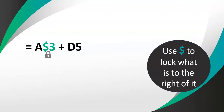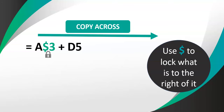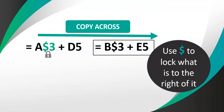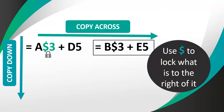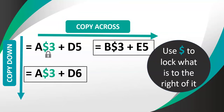Now what if we lock the number instead? We put a dollar in front of the number, so the 3 is locked. If I copy across that doesn't make a difference, because copying across changes the letters — the A would still become B and the D would become E, since the 3 would never have changed anyway. However, if we copy down now, that locked 3 comes into play — copy it down one block and the 3 stays the same. But look at D5: the 5 changed to a 6 because there was no lock there.